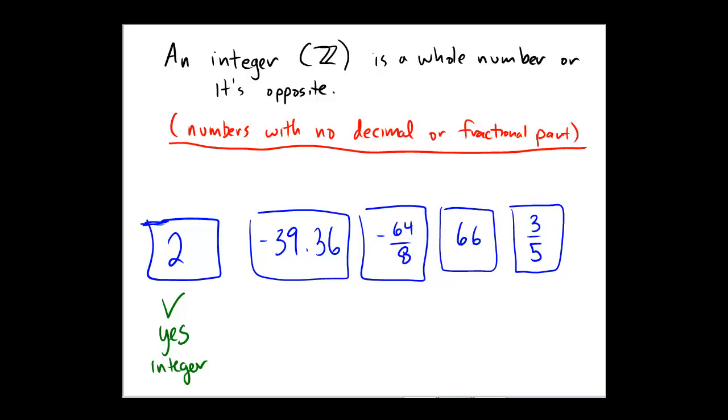Next we have the number negative 39.36. Negative, not an issue. 0.36, big issue, because an integer has to have no decimal, no fraction part. This one has a decimal part, so no, not an integer. For those that are curious, we call this a rational number. That's the class, the most general classification for that one.